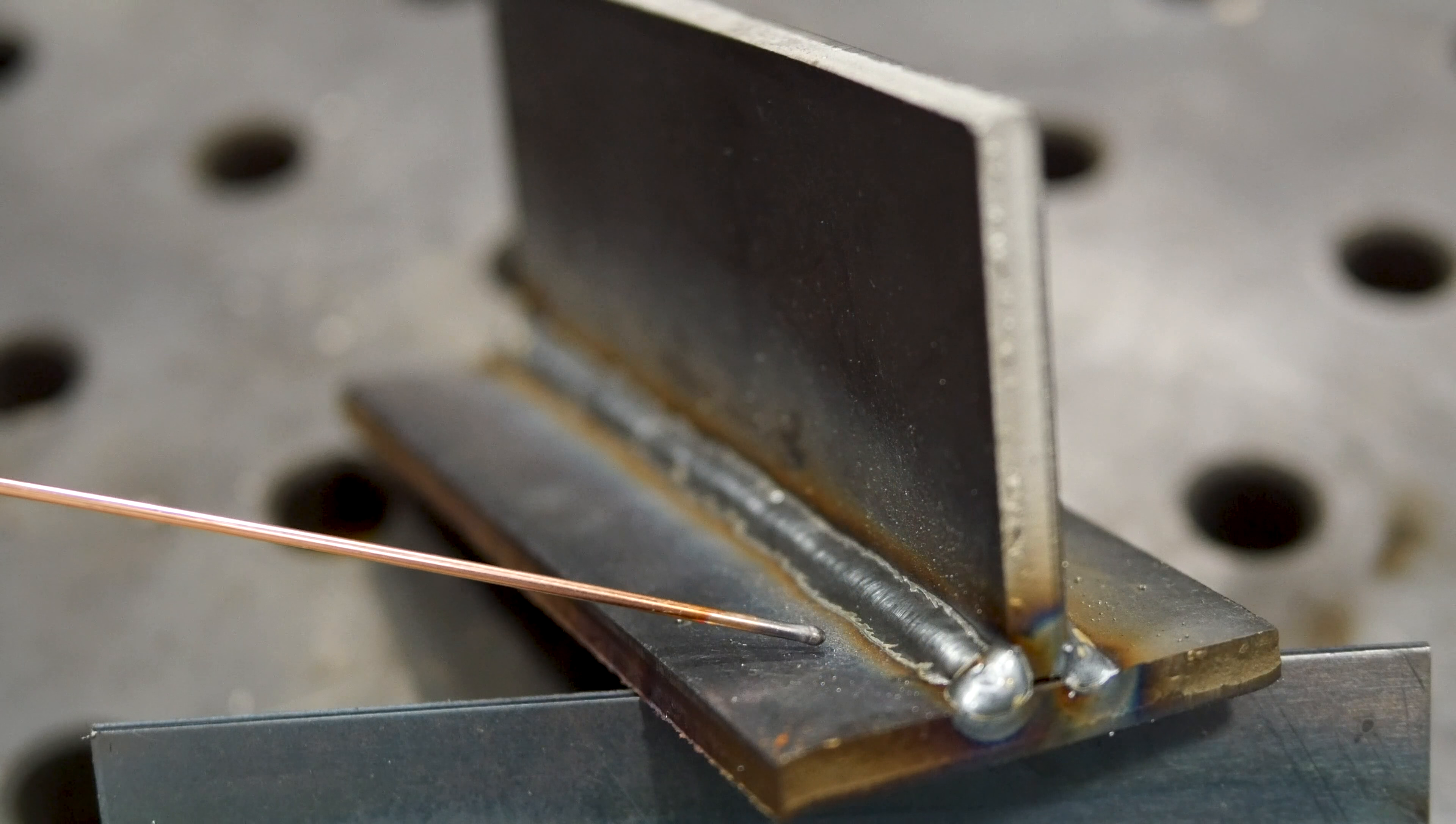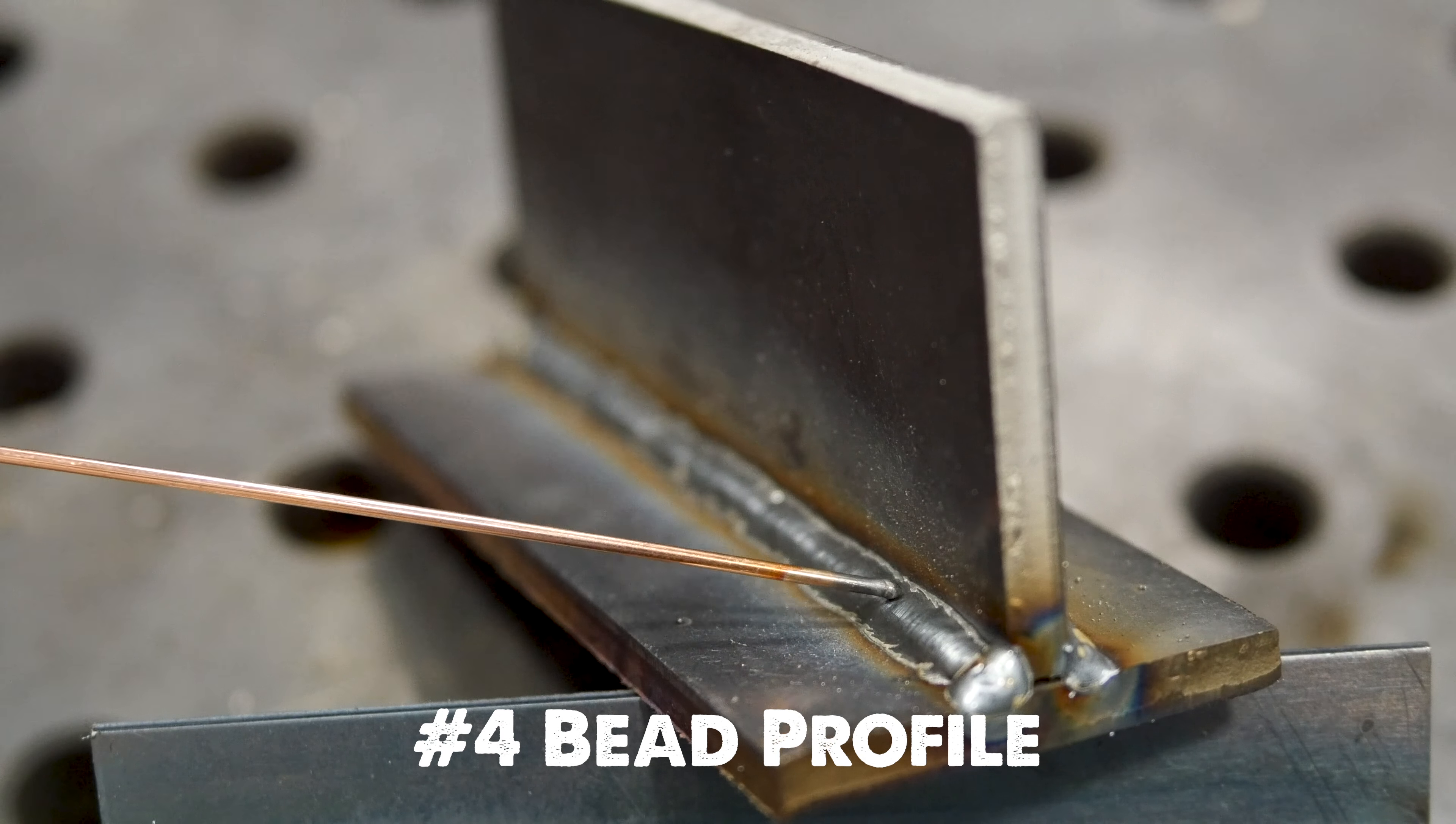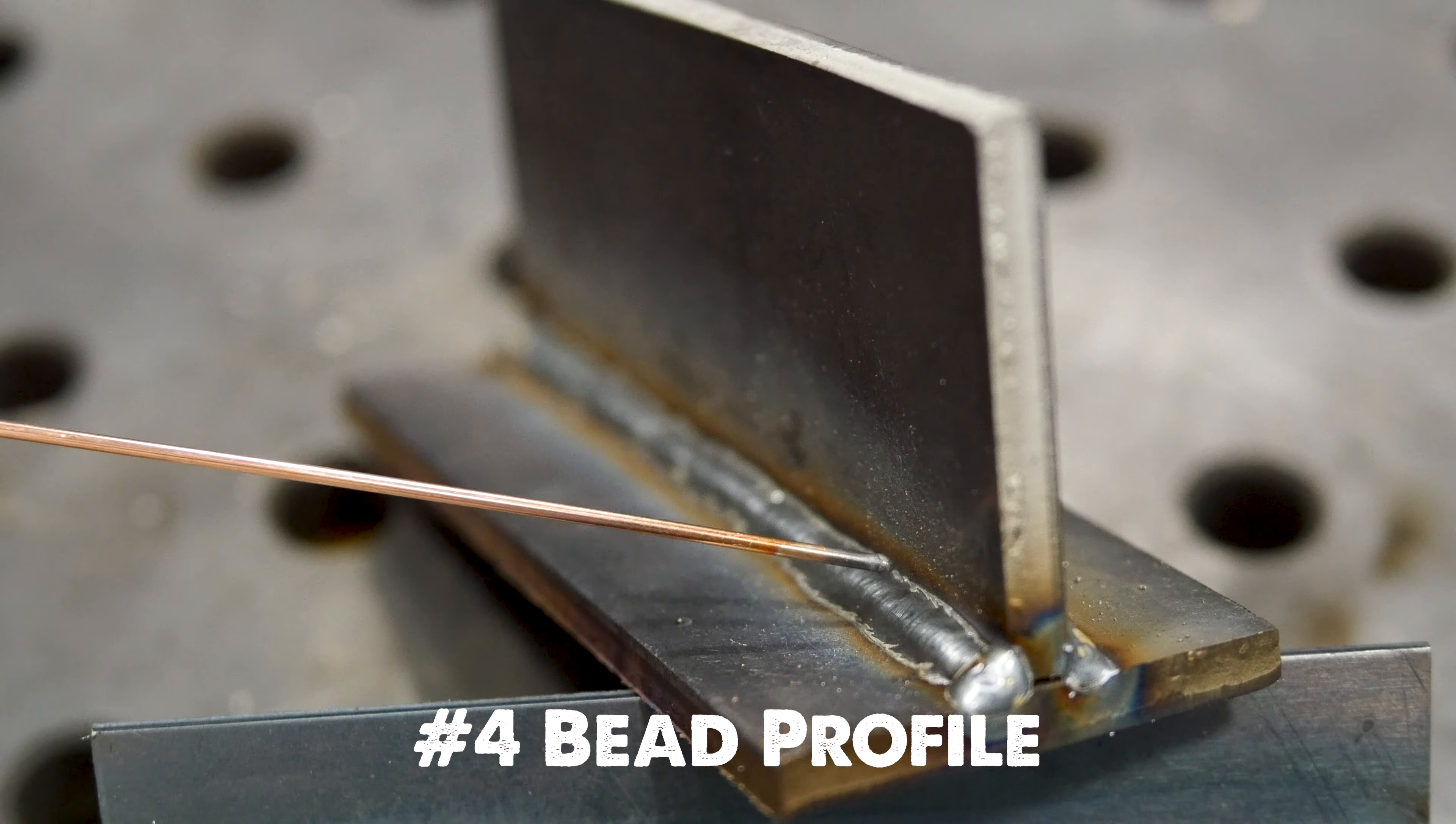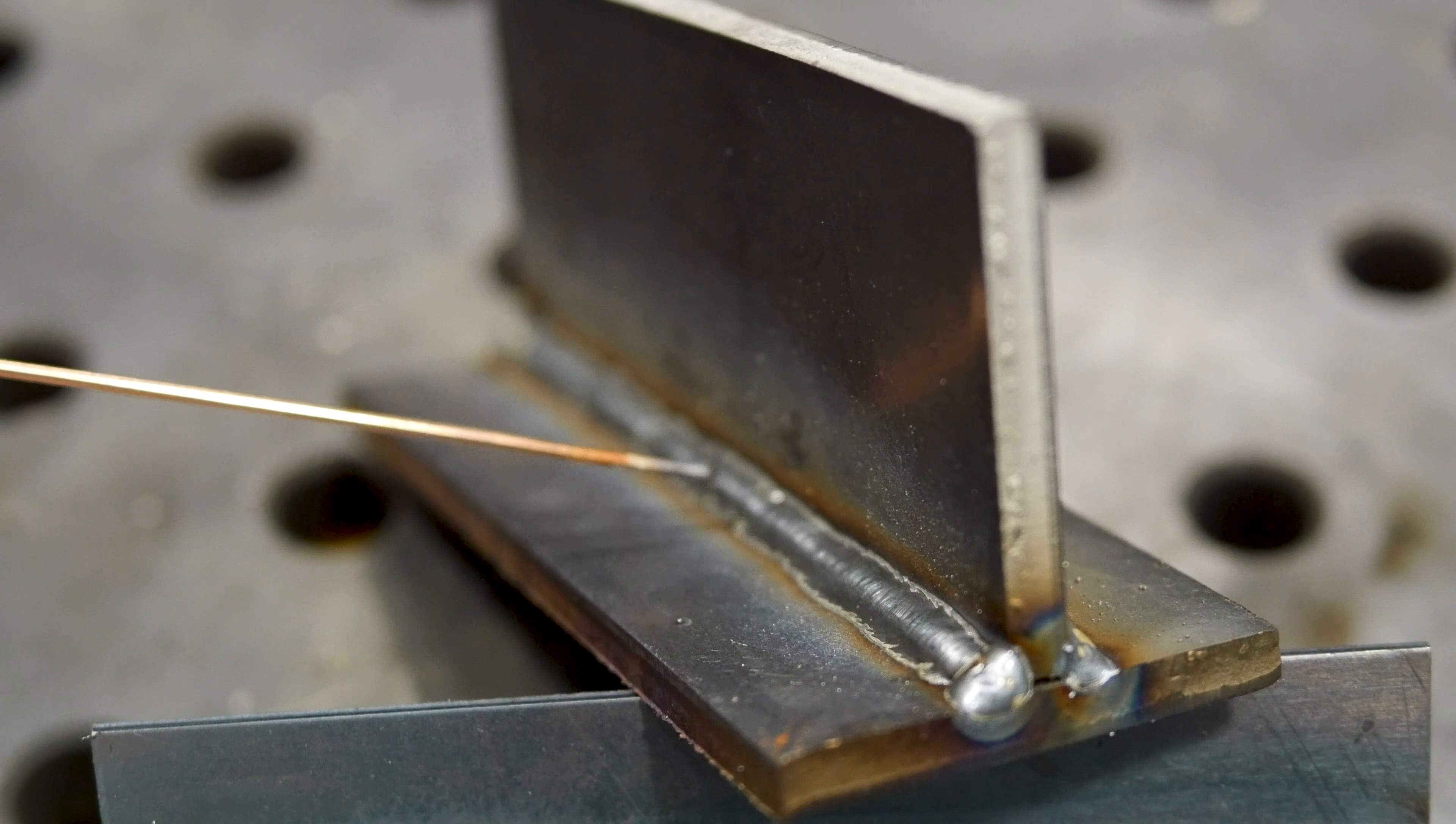The fourth way to see if your weld is good or not is to look at the bead profile. This bead in particular is slightly convex so it's humped up. I know for a fact that this bead was done about a volt too low.